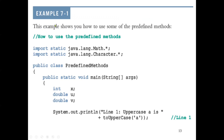Here is an example program showing how to use some of the predefined methods. We start with the concept of importing: import static java.lang.Math.* imports everything from the Math class, or import static java.lang.Character imports the Character class. As we said, by default we don't import the lang package — it's already imported for us. System.out.println is also in the lang package. In the main method, we declare three variables: int x, double u, and double v.